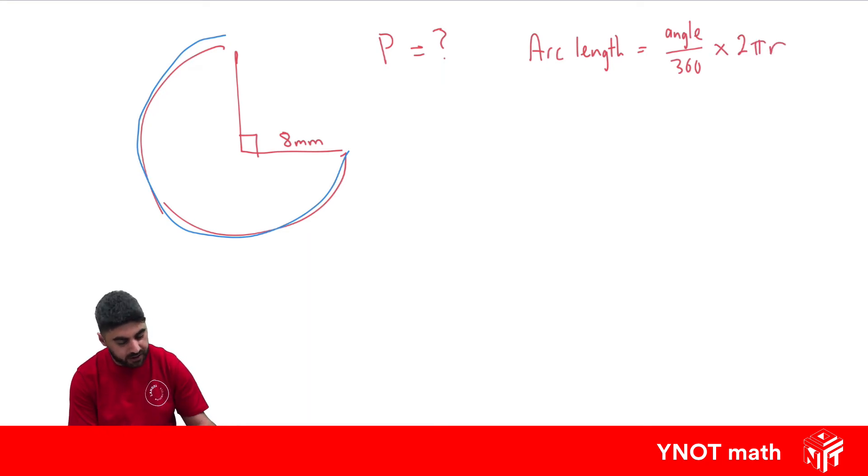So we need the angle inside here. We know this is a 90 degree angle, so this has to be a 270 degree angle to complete the 360. Or we could replace this part here knowing that we have three quarters of a circle.